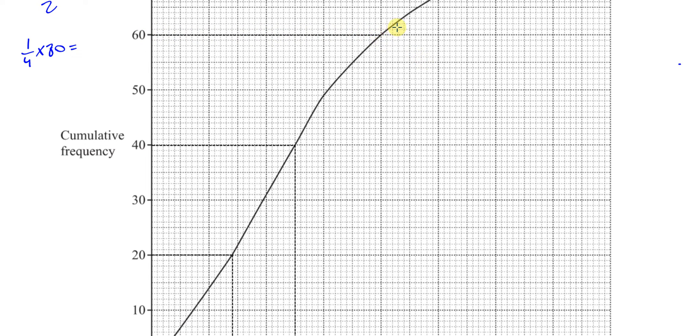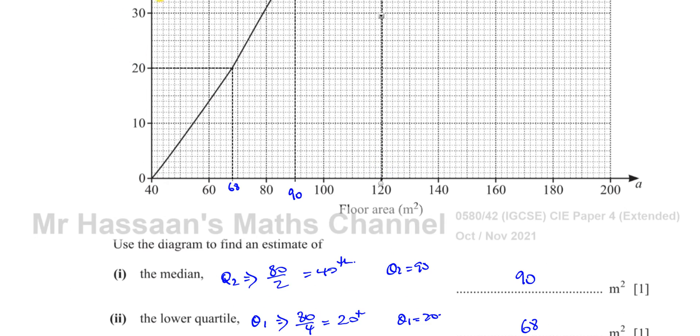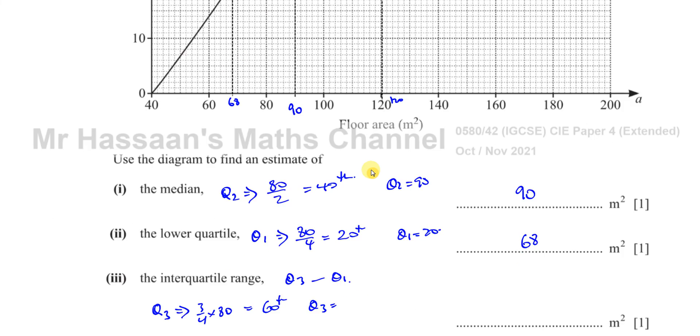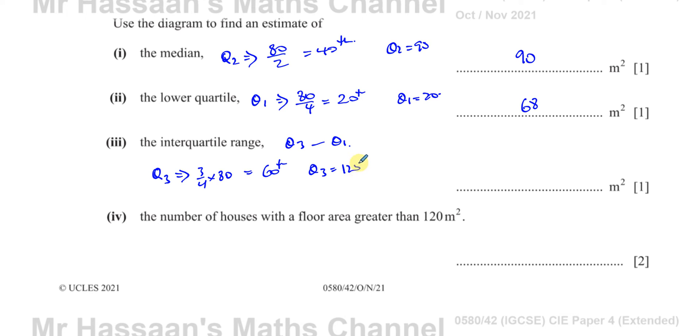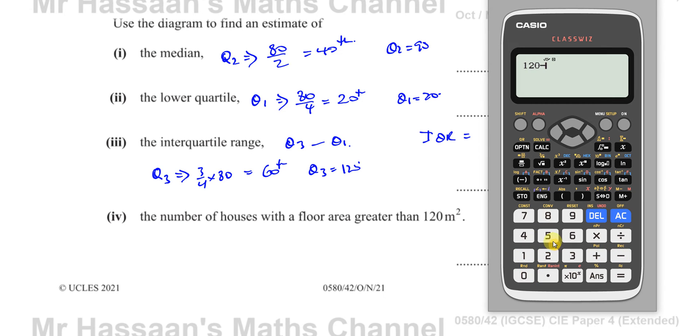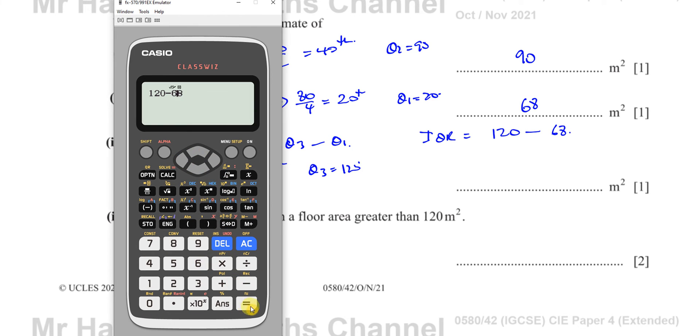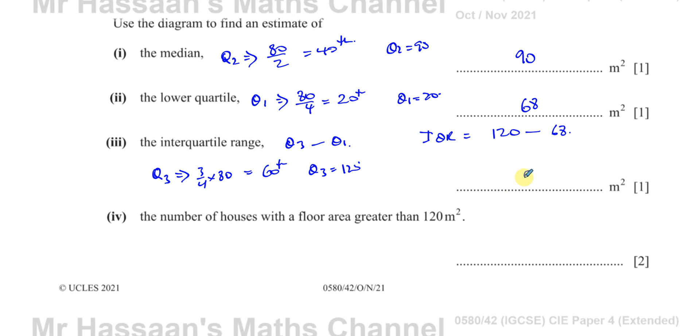It looks like it's exactly at this point here. I'll take this and put it down. See where it leads us down to? It leads us down to 120. That's exactly 120, it seems. That's the upper quartile. So we're going to have Q3 is equal to 120. Therefore, the interquartile range is equal to Q3, which is 120, minus the lower quartile, which is 68. That gives us 52. So the interquartile range is 52 meters squared.